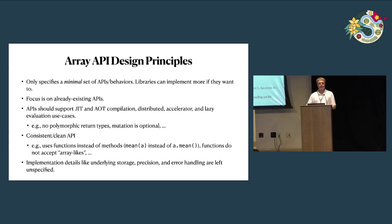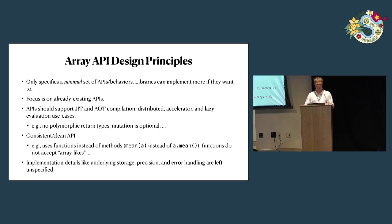We focused on APIs that are already existing — we're not really trying to innovate so much as create a specification based on what's already there. We made sure the APIs support important use cases like ahead-of-time compilation or distributed computation. For example, we avoided polymorphic return types, and mutation is completely optional in the API. We also aimed for a clean and consistent API: almost all functions in the API are functions instead of methods, functions only accept array objects not array-likes, and implementation details like underlying storage, precision, and error handling are intentionally left unspecified.